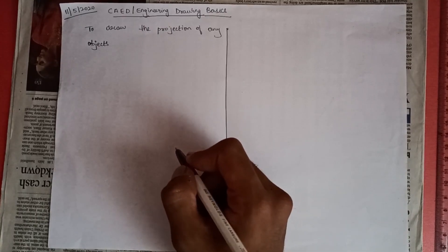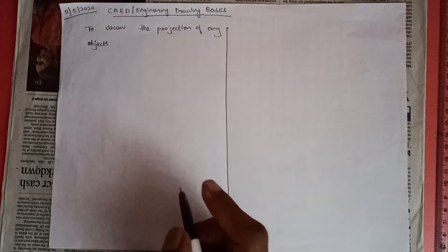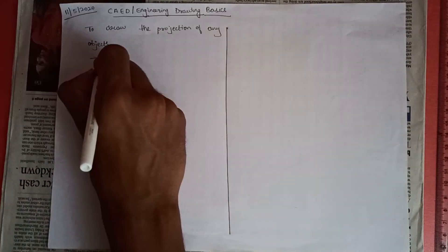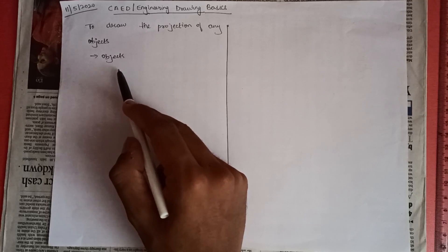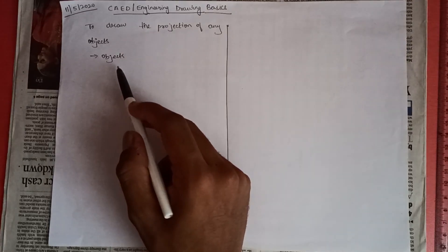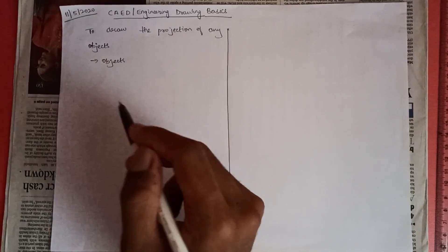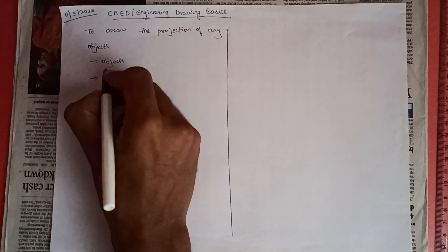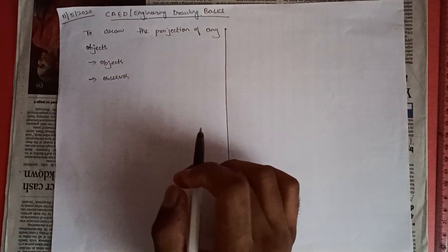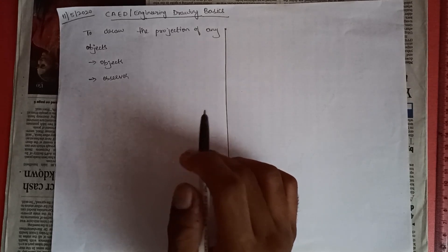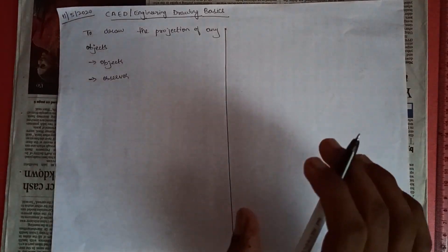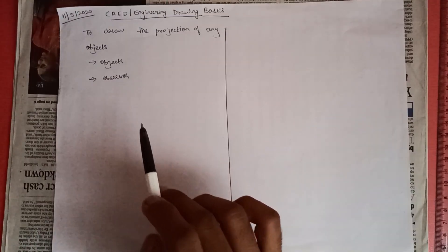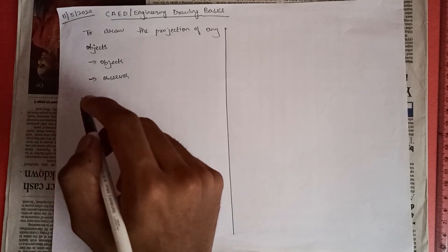In engineering drawing we look at orthographic projections of points, lines, planes, and solids. To draw the projection of any object, there is some basic information required. The object in any given problem will be given with its specifications, and there will be an observer who observes the object from his own perspective. The observer will always be perpendicular to his respective reference plane.